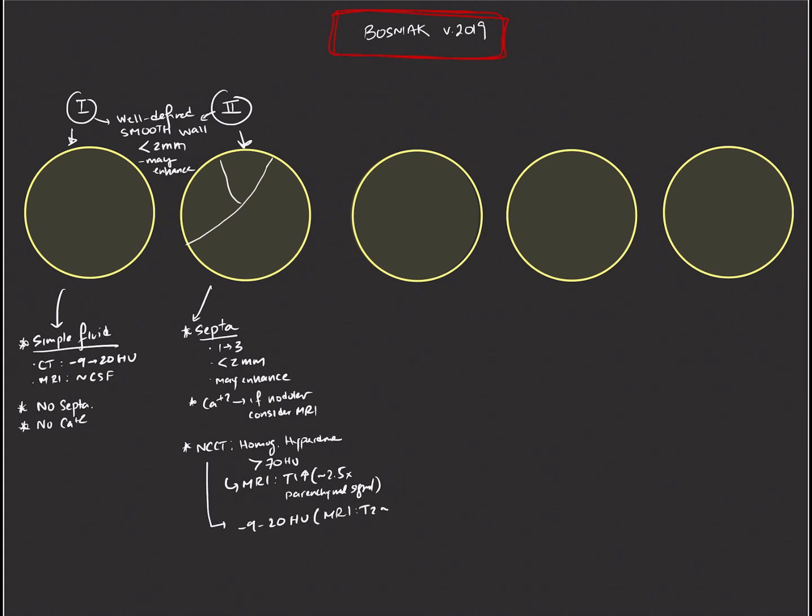A cyst that we don't need to worry about that needs no further follow-up. The other feature, of course, on non-contrast CT will be simple fluid within it. So you may have a few thin septations with a mass that otherwise has simple fluid, both by Hounsfield units and by MRI signal that's similar to CSF. We're going to call that a Bosniak 2 cyst.